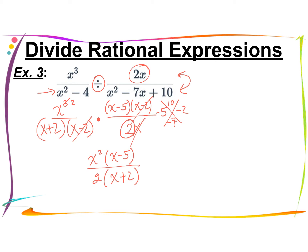I have to set the restrictions. They come from this denominator, the now-denominator from the flipped fraction, and the original second numerator — because it was originally my denominator — so all four places except the first numerator. x can't be negative 2, positive 2, 0, or positive 5.